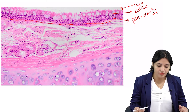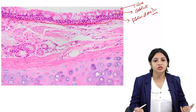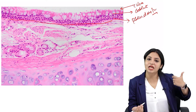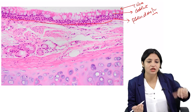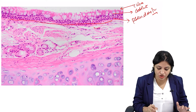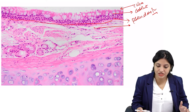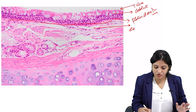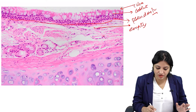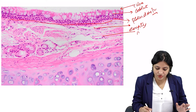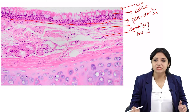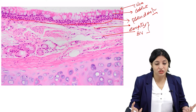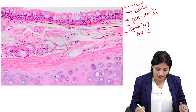Coming below that — mucosa has epithelium, lamina propria, and muscularis. There is some loose tissue here with empty spaces, which is part of the lamina propria. Lamina propria is usually made up of loose tissue and blood vessels.